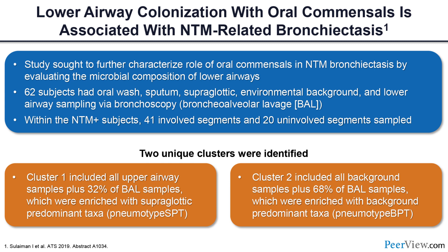The microbiome has become extremely important in looking at patients with pulmonary infections, particularly non-tuberculous mycobacterial infections. This large study characterized the role of oral commensals in NTM bronchiectasis patients by evaluating microbial composition of the lower airways. Dr. Segal and his group looked at 62 subjects with oral wash, sputum, supraglottic, environmental background, and lower airway sampling via bronchoscopy. Two unique clusters were identified: cluster one included all upper airway samples plus 32% of BAL samples enriched with supraglottic predominant taxa, and cluster two included all background samples plus 68% of BAL samples enriched with background predominant taxa.